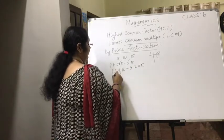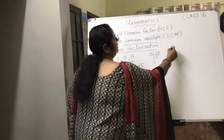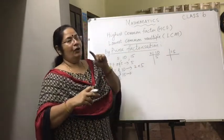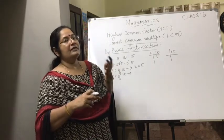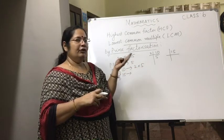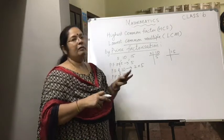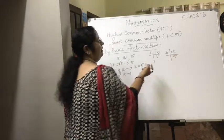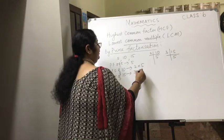Next is the prime factorization of 15. We start with the least prime number, 2, but 15 is not divisible by 2 because the last digit is 5. So we go to the next prime number, 3. Adding the digits: 1 + 5 = 6, which is divisible by 3, so 15 is also divisible by 3. Dividing 15 by 3 gives 5, which is a prime number, so the prime factorization of 15 is 3 × 5.